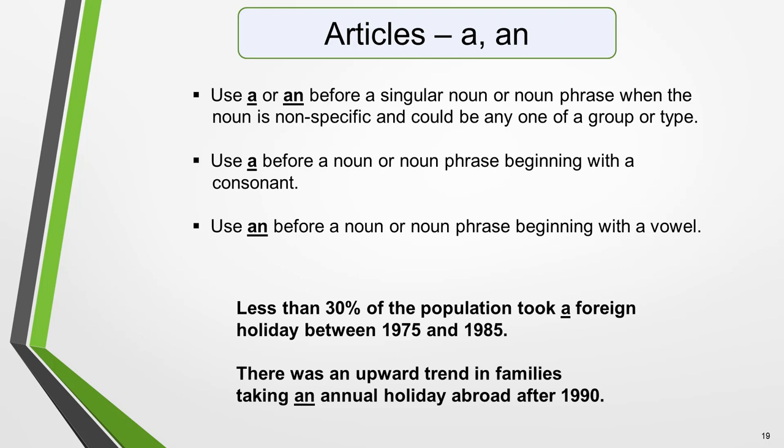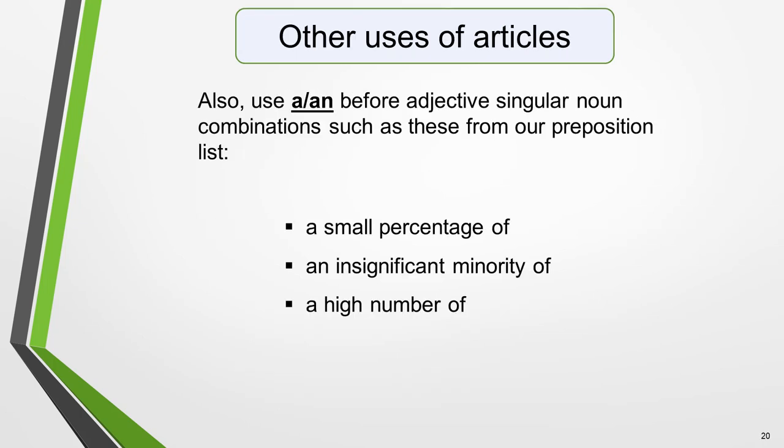Use 'a' or 'an' before a singular noun or noun phrase when the noun is nonspecific and could be any one of a group or type. Use 'a' before a noun or noun phrase beginning with a consonant, and 'an' before one beginning with a vowel. For example: 'Less than 30% of the population took a foreign holiday between 1970 and 1985. There was an upward trend in families taking an annual holiday abroad after 1990.' Also use 'a' or 'an' before an adjective-singular noun combination, such as: a small percentage of, an insignificant minority of, a high number of.